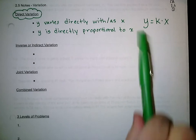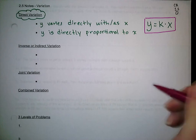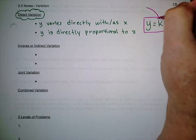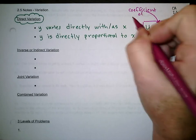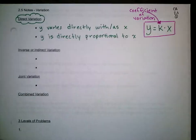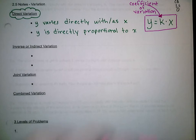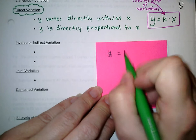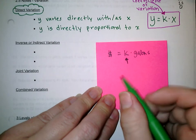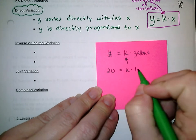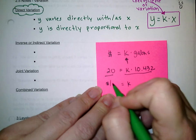With direct variation, the two variables are directly across the equal sign from each other. The letter K in every variation equation is called the coefficient of variation. In the gas station example, where the amount of money I pay varies directly with the number of gallons I buy, K would be the price per gallon. So if I spent $20 for 10.432 gallons, solving for K gives the cost per gallon.